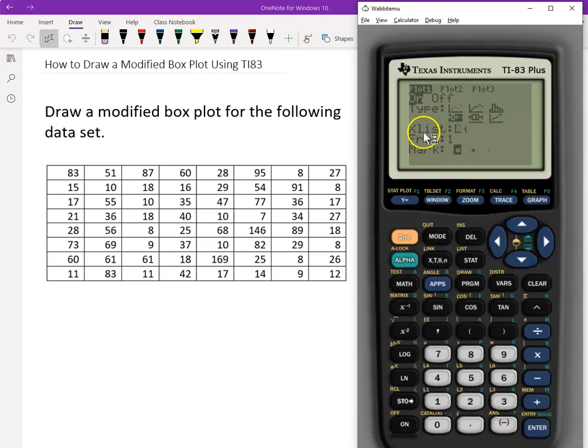Okay, and then go down. X list means the data. So my data is L1. Good. And then go down. Here at the frequency, we don't have frequency. So type one, or it's automatically set. If you have the frequency, okay, type where your data is. Mark, you can choose whatever you want. And then graph.